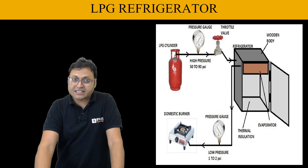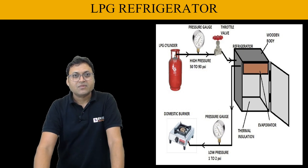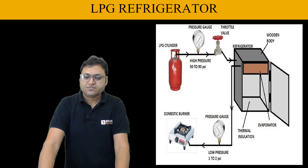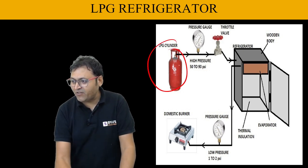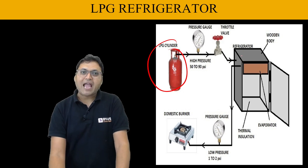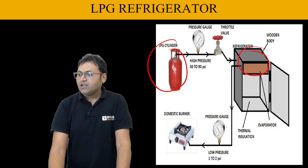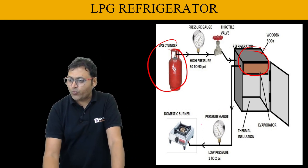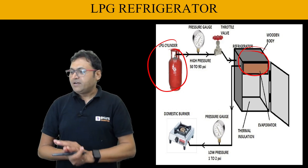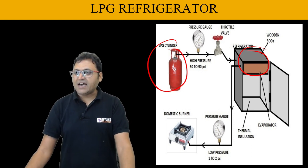This refrigeration system using LPG eliminates the need for a compressor as well as a condenser, and since LPG is eco-friendly, there is no ozone depletion potential. As you can see in the diagram, the LPG cylinder is connected to the refrigerator. High-pressure LPG enters the refrigerator, expansion reduces the pressure and temperature, producing the refrigeration effect. The low-pressure LPG coming out can then be utilized further in a domestic burner — so the same LPG cylinder serves both purposes.